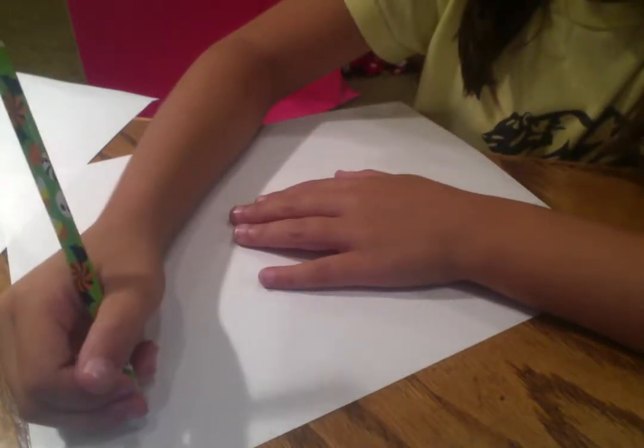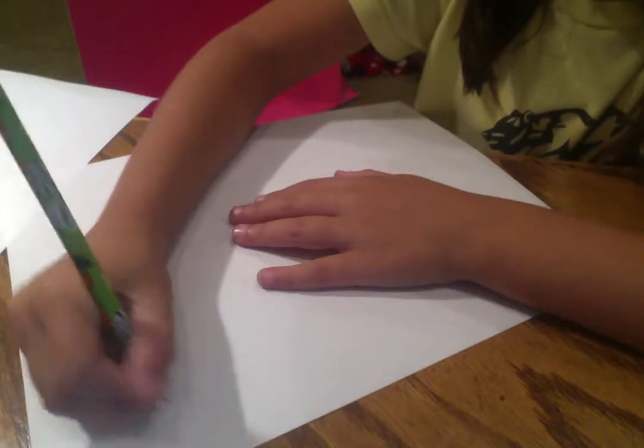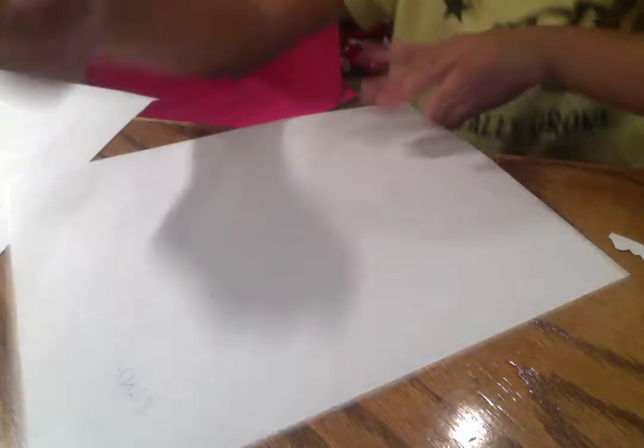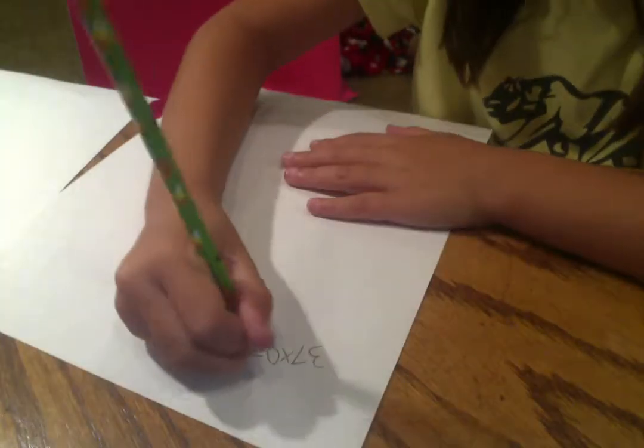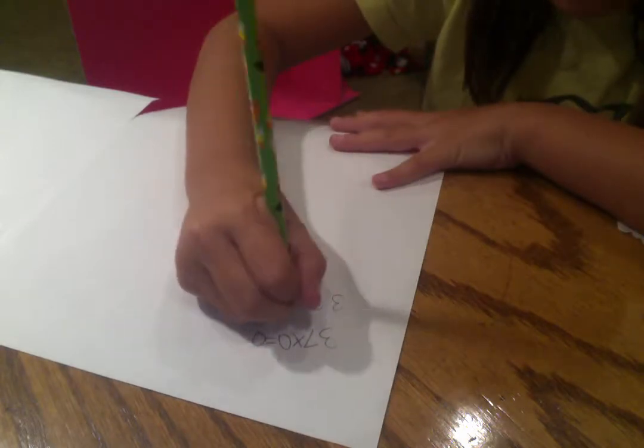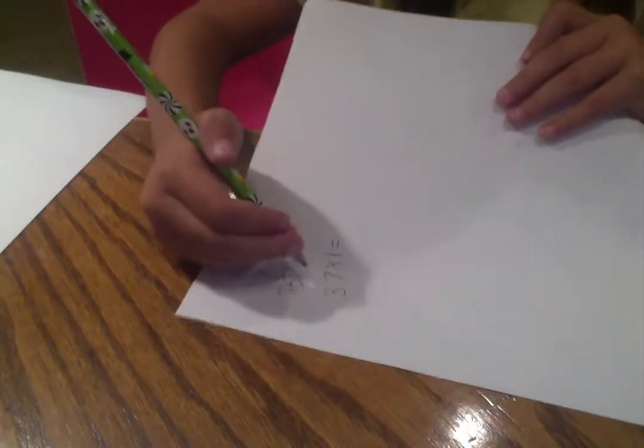I'll show you the first trick in math. So 37 times 0 equals... the zeros and the ones are probably the easiest things in multiplication. When you do this, it's always just gonna equal 0 because it's 0 times. And 37 times 1, that's gonna be easy because it's only one time, so it's just gonna be itself, 37.